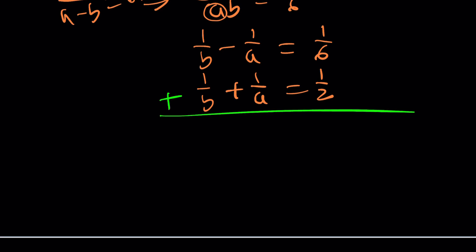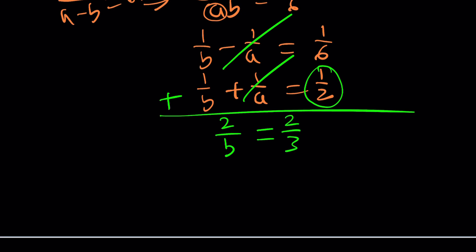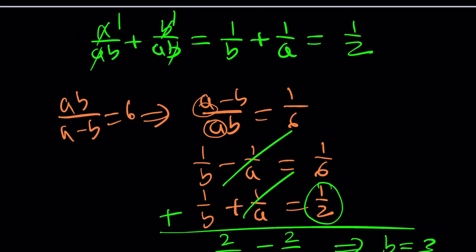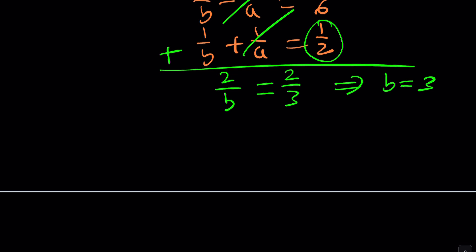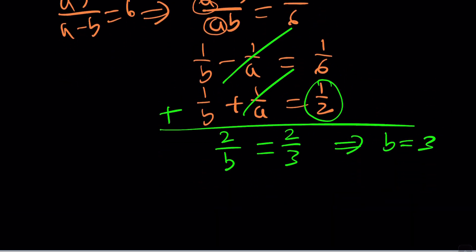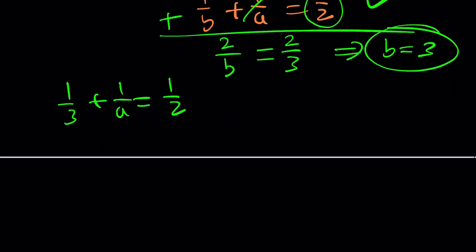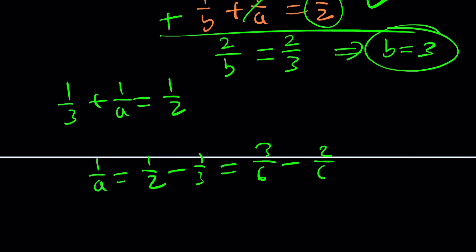This is going to be an awesome system because we can directly eliminate. Adding the two equations: 1 over a cancels out. We get 1 over b plus 1 over b, which is 2 over b, equals 1 over 6 plus 1 half, which is 1 over 6 plus 3 over 6, which is 4 over 6, which is 2 thirds. So 2 over b equals 2 thirds, meaning b equals 3. Then substituting back: 1 over b plus 1 over a equals 1 half, so 1 over a equals 1 half minus 1 third, which is 3 over 6 minus 2 over 6, which is 1 over 6, meaning a equals 6. Same solutions!